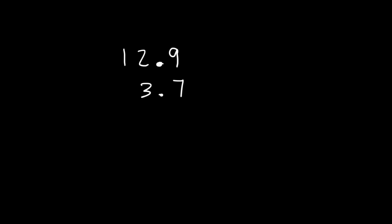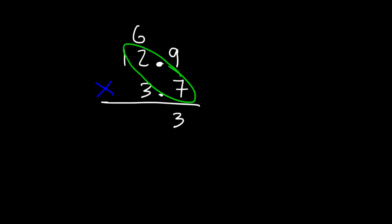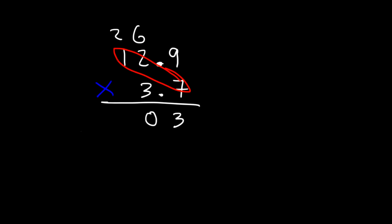Now let's multiply 12.9 by 3.7. Feel free to try this problem. So first, let's multiply 9 times 7. 9 times 7 is 63. So we're going to write the 3 and carry over the 6. Next, let's multiply 2 times 7. 2 times 7 is 14, plus 6 — that's going to be 20. So we're going to write the 0 and carry over the 2. Next, we have 1 times 7, which is 7 plus 2. That's equal to 9.